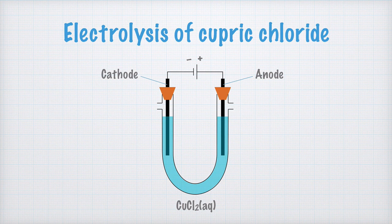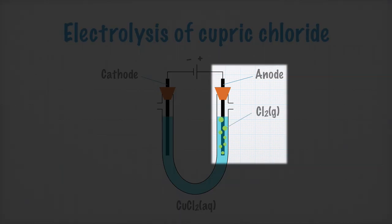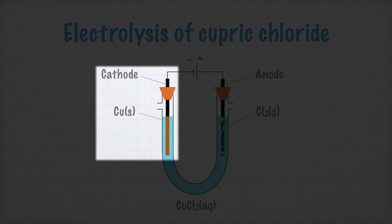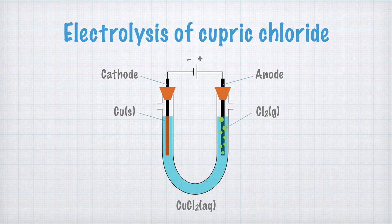After a short while, you'll notice that chlorine gas forms at the anode. And on the cathode, a layer of solid copper is deposited. But, what's going on here?